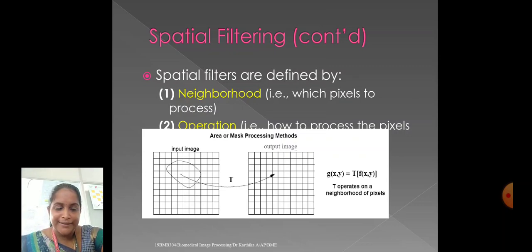Same example here, we have input image F of X, Y, output image G of X, Y. Here, we have some Spatial Filtering Techniques to get the required filtered output.